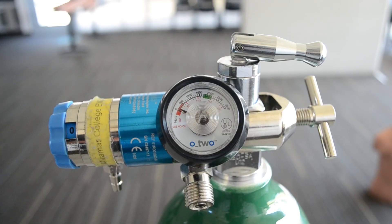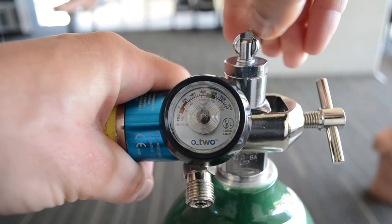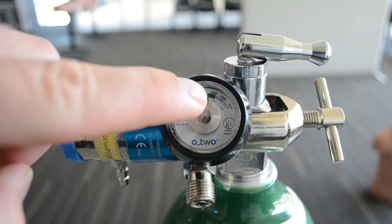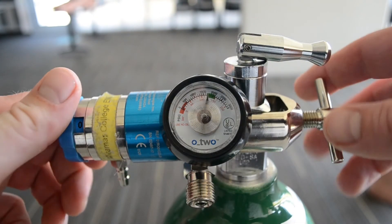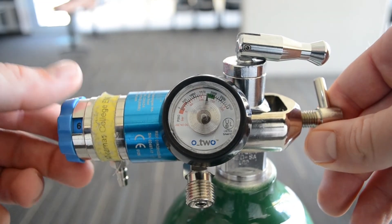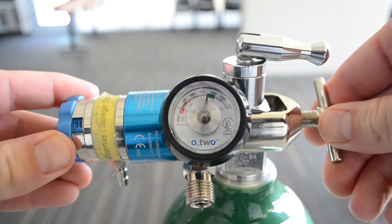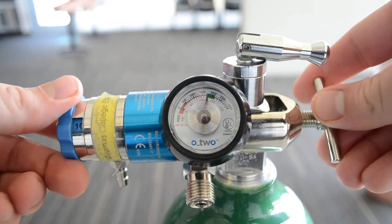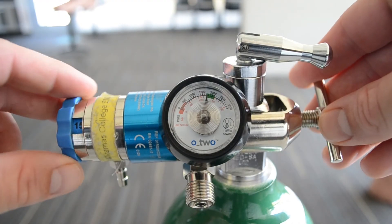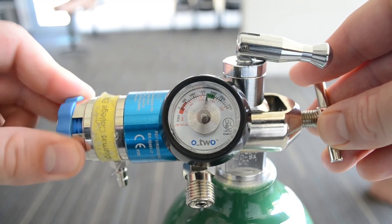So once we've got the regulator on our bottle, we'll go ahead and pressurize the regulator. We'll do that simply by turning this one full turn. You can see the dial has jumped up. And now you are able to adjust the flow rate as needed. So this would be 6, the high end of a nasal cannula. This would be 10, the low end of a non-rebreather. And this would be 15, either the high end for a non-rebreather or your go-to for using a bag valve mask.